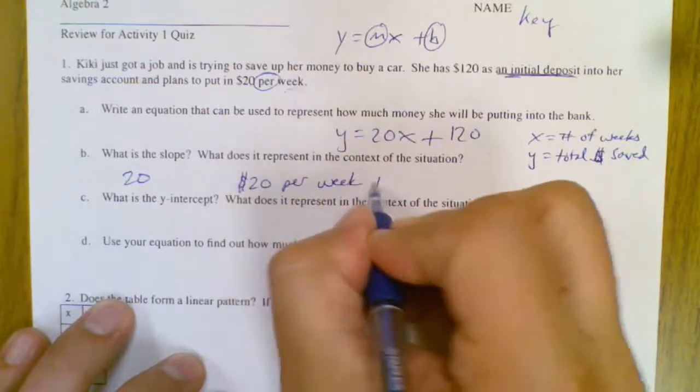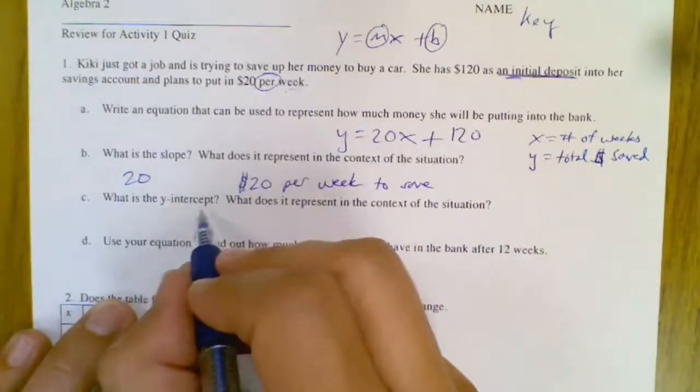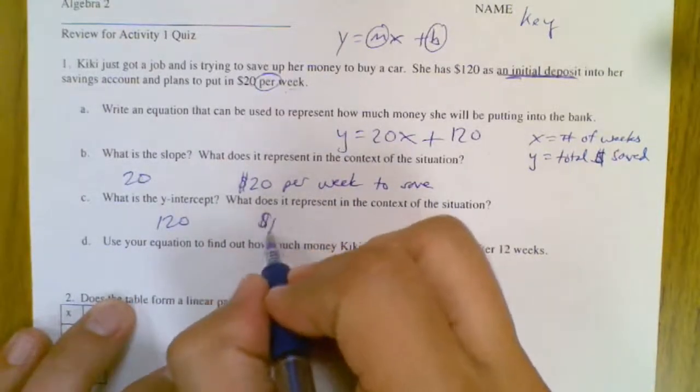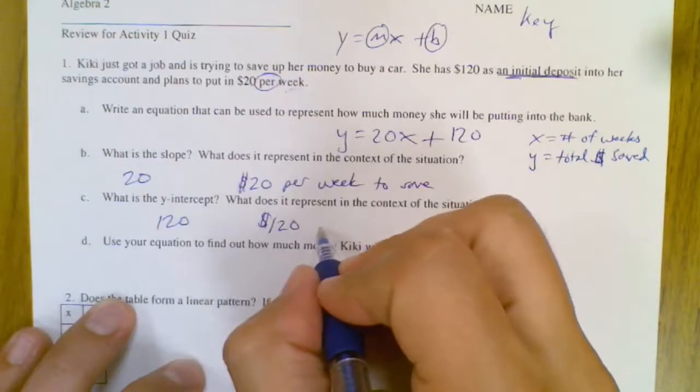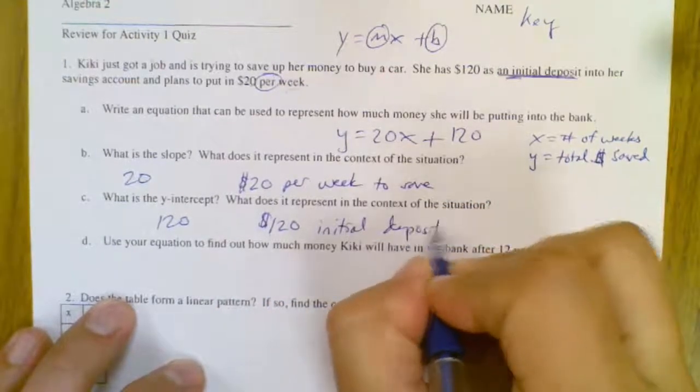What's the y-intercept? 120, which stands for $120 for initial deposit in an account. Sometimes an account requires you to have a certain amount to start.